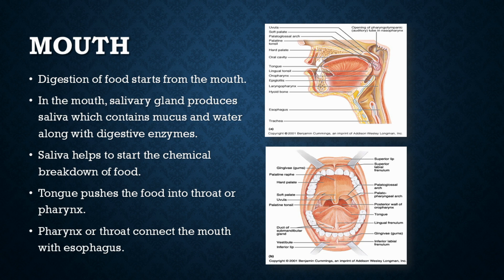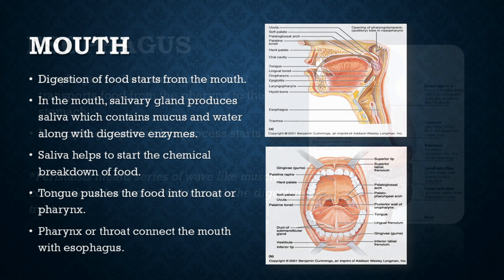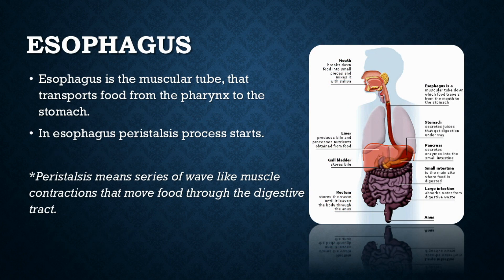The medical term for throat is pharynx. The pharynx connects the mouth with the esophagus. The esophagus is the muscular tube that transports food from the pharynx to the stomach. Here in the esophagus, the peristalsis process starts. Peristalsis means a series of wave-like muscle contractions that move food through the digestive tract. Because of peristalsis, food is moved through the esophagus tube to the stomach.